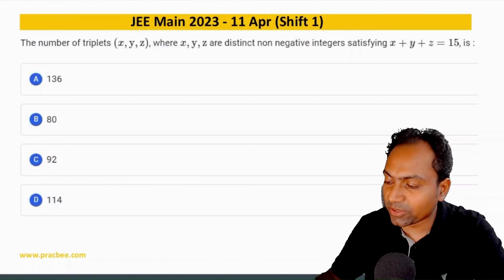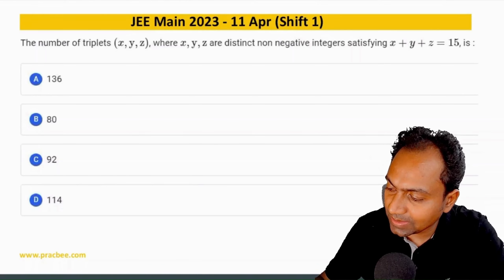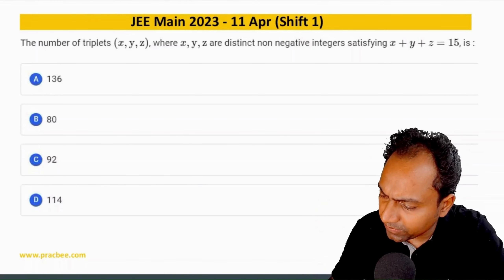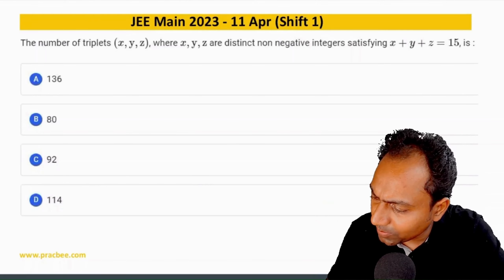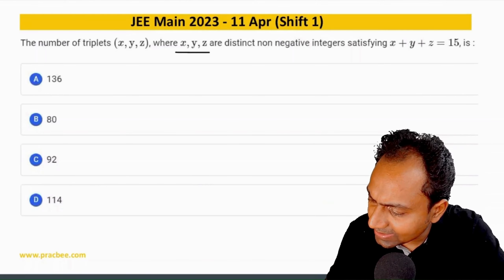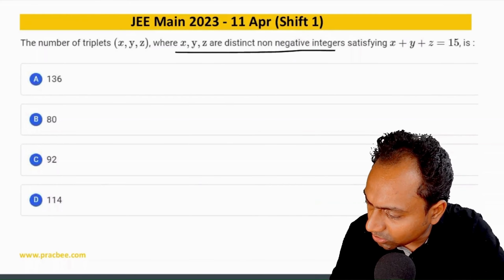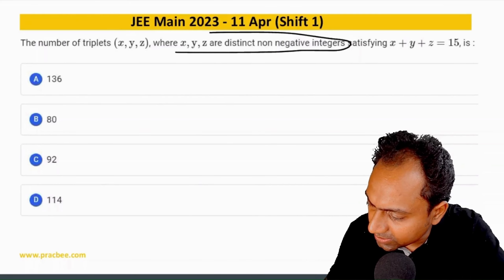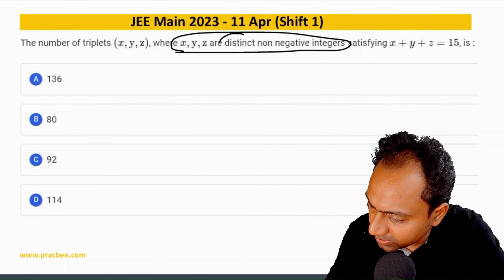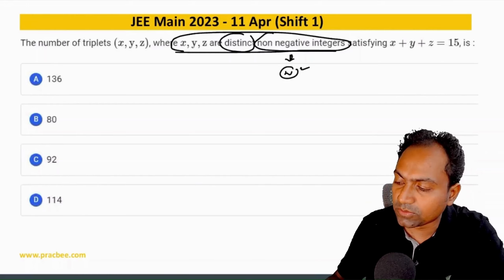In this 2023 question there is a very important phrase you might miss: x and y are distinct non-negative integers. Both words are important - distinct and non-negative. So basically we are looking for whole numbers, which is in the purview of beggar's formula.